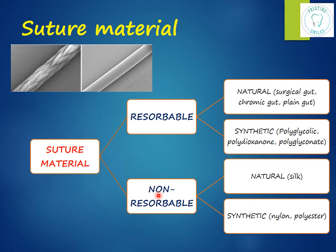These materials can be further classified as monofilament and braided. Monofilament, as the name suggests, is a single strand and needs to be handled very delicately. Braided consists of multiple thin strands twisted together — easier to tie than monofilament, but it has small spaces or interstices between threads where bacteria can hide and grow, increasing the risk of infection. This is called the wicking effect.